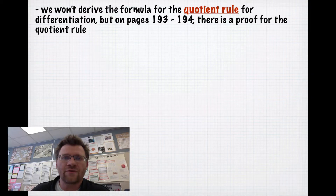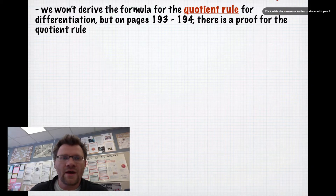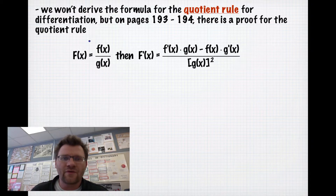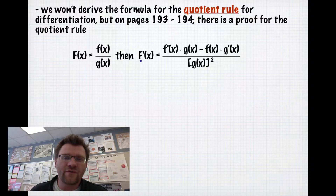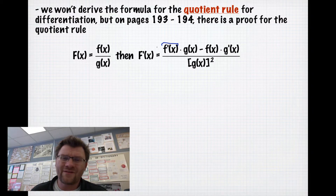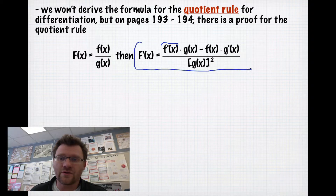We won't actually derive the formula for the Quotient Rule this time around, but on pages 193 to 194 there is a proof. Here's the Quotient Rule: if we have a function made up of two functions being divided by each other, then the derivative is the derivative of the top multiplied by the denominator, minus the top multiplied by the derivative of the bottom, all over the bottom squared. Put this on your formula sheet.